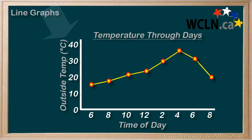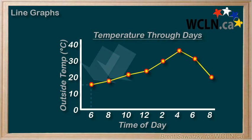From this graph, we can see that at 6 a.m. we draw a line across and see that the temperature is about 15 degrees. And then at 8 a.m., the temperature is a bit higher — we draw a line across and see that it's about 18 degrees.